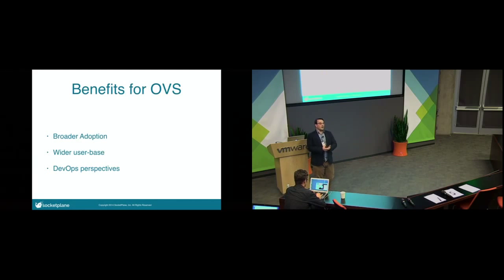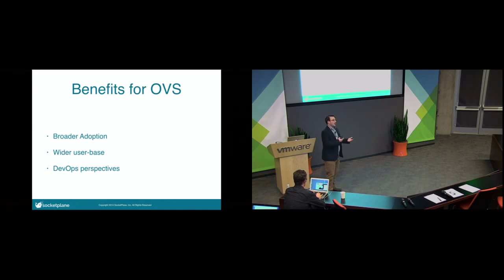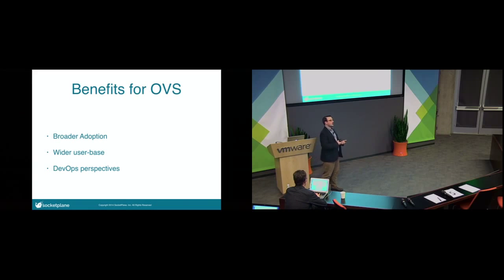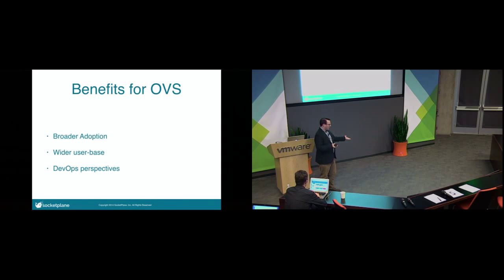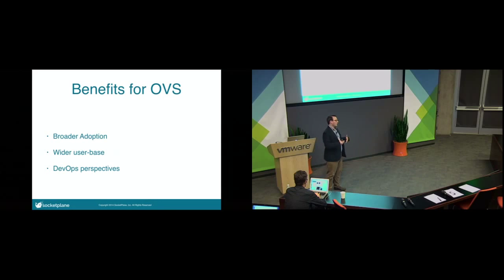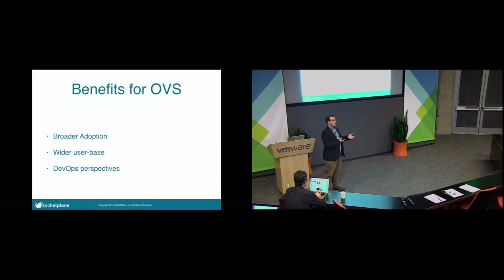What would be the benefit of Open vSwitch from the Docker integration? We see broader adoption of Open vSwitch, extending it into a wider user base. We've started having discussions with people in the Docker community about bringing in Open vSwitch, and the thing we hear is that Open vSwitch is heavy and complex. But it's not — have you seen Linux Bridge? BR-CTL versus OVS-CTL, it's really no different. I think bringing systems people currently working on Docker into the Open vSwitch community would be very positive for both parties, and we'll start to get new requirements and DevOps perspectives on whether the tooling is good enough.